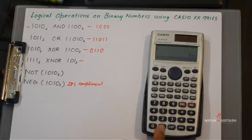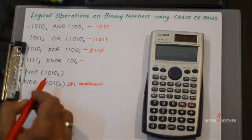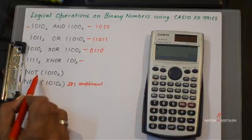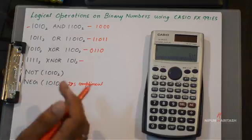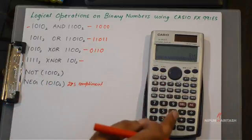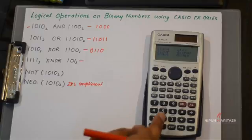Then this part is important. When you need to perform the NOT operation on a binary number, you simply go to SHIFT, BASE and select 5.